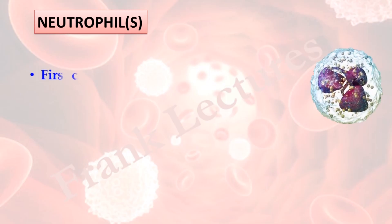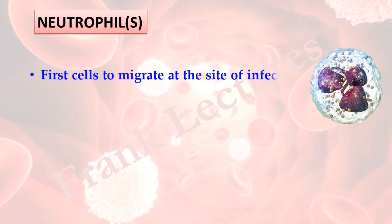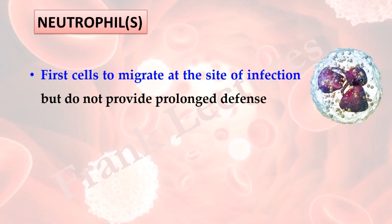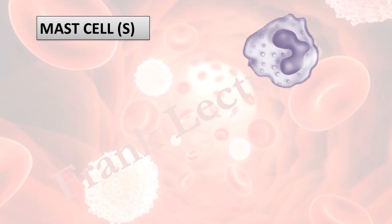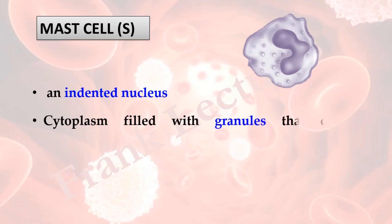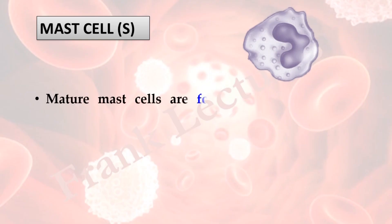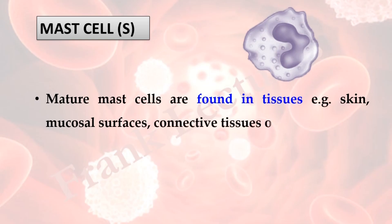Neutrophils are the first cells to migrate to the site of infection, but they do not provide prolonged defense since they have a lifespan of only a few days. Mast cells are similar to basophils in appearance and function, but they have an indented nucleus. The cytoplasm is filled with granules that contain vasoactive mediators. Mature mast cells are found in tissues such as skin, mucosal surfaces, and connective tissues of organs. They play a role in inflammation and allergic responses.